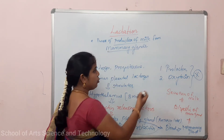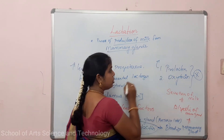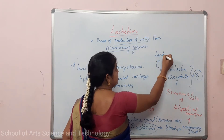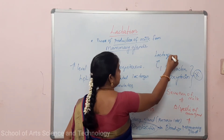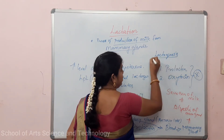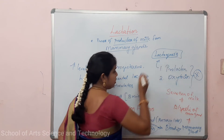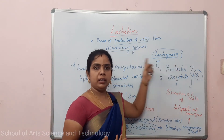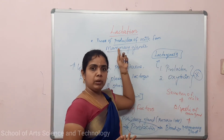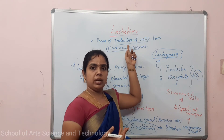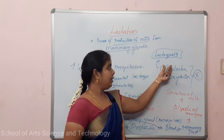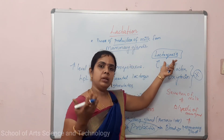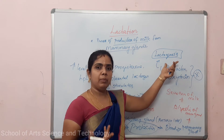Prolactin hormone plays a major role in lactogenesis. Lactogenesis means the production of milk. That is the meaning of lactogenesis — production of milk from the mammary gland. The term 'lactin' is related to milk.